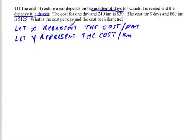And so now we're going to translate these two sentences. First one is cost for one day and 240 kilometers is $39. So that means that the number of days is going to be one. So it's going to be the cost for one day plus the charge for 240 kilometers, which you're going to calculate by 240 times the cost per kilometer, which is going to be our y. And that's going to equal $39.